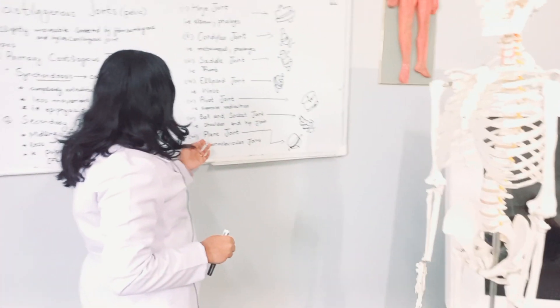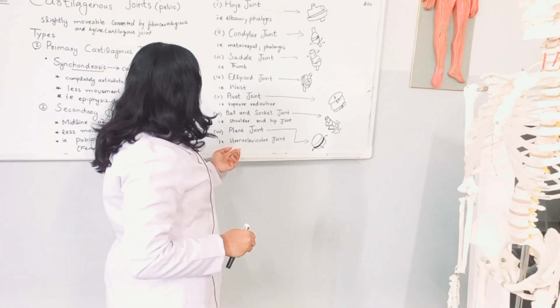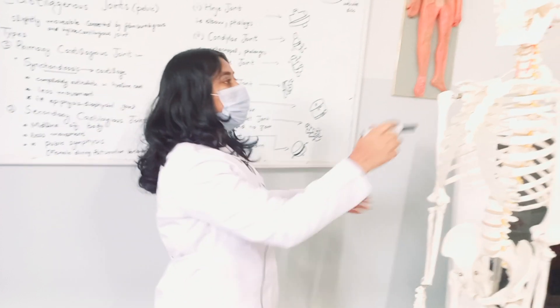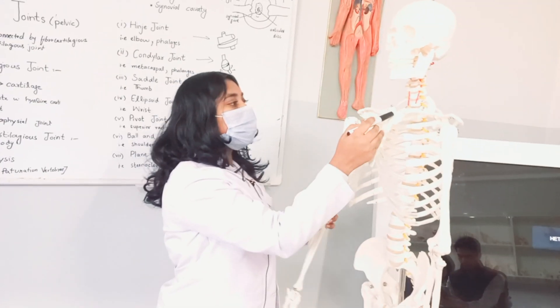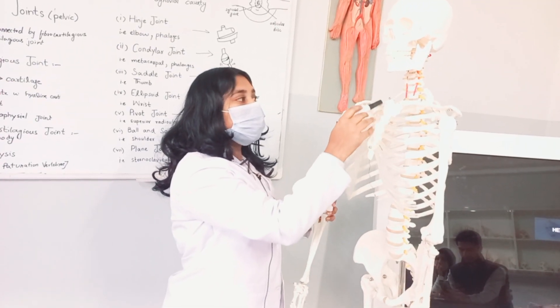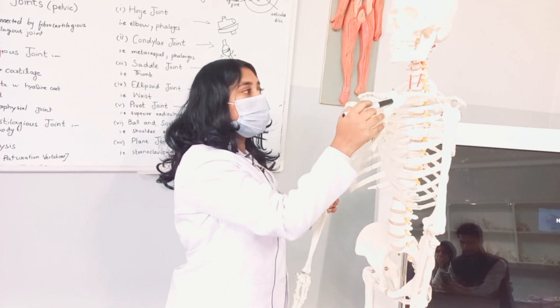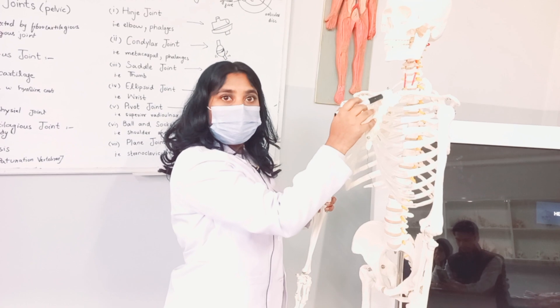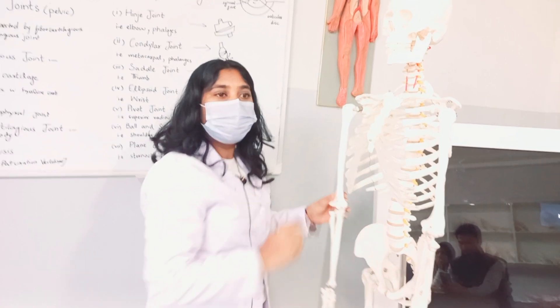The plane joint is the sternoclavicular joint. This is the clavicle and this is the sternum, and they combine to form the sternoclavicular joint. Thank you.